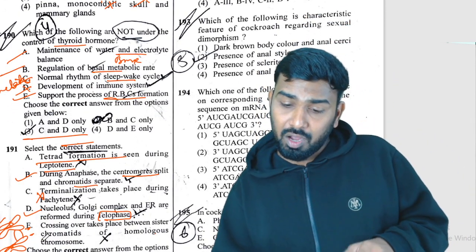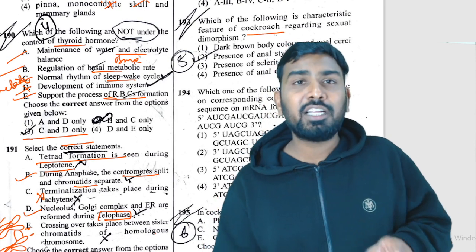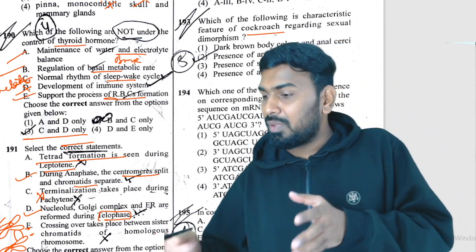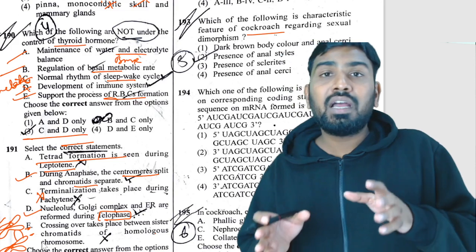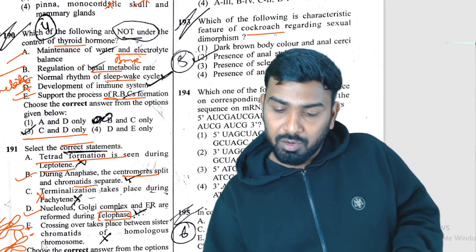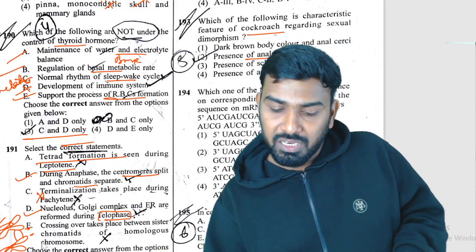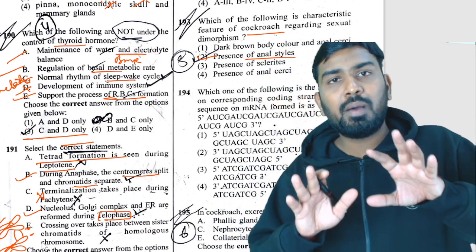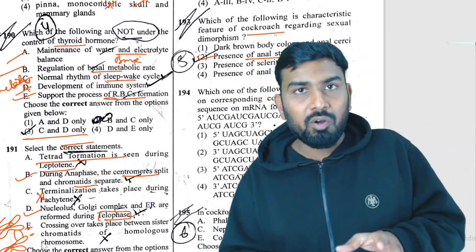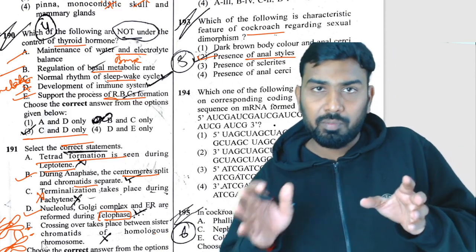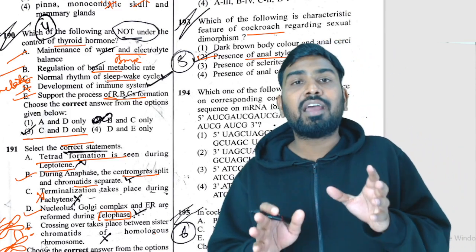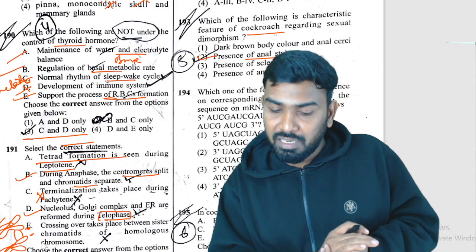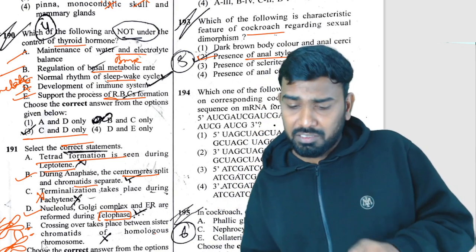Question 193: characteristic features of cockroach — sexual dimorphism. Male cockroach has anal styles; female does not. This is the basis for distinguishing male from female externally. Presence of anal styles in the male is the answer for Q193.